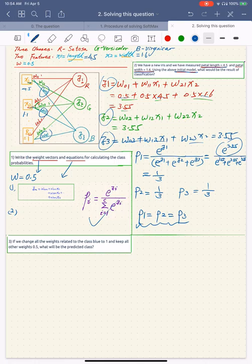So let's look at the third sub-question, so all the blue to 1, the weight related to the class blue to 1 and keep all other weights 0.5. So we also start from z1, z1 you can see from here doesn't change at all. So result should be same, 3.55.